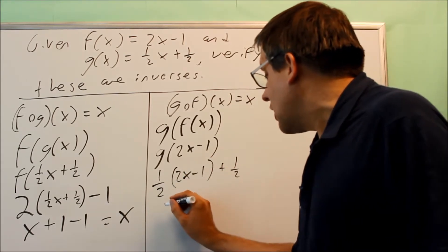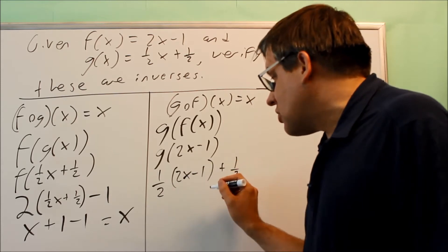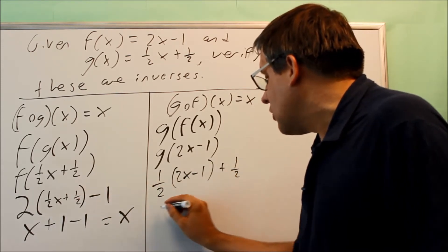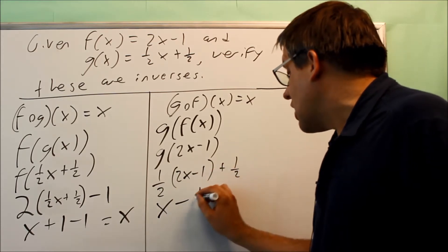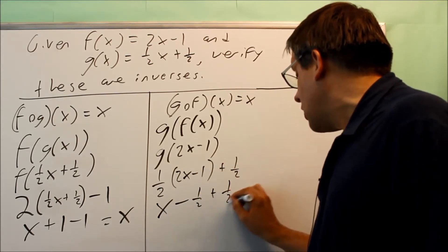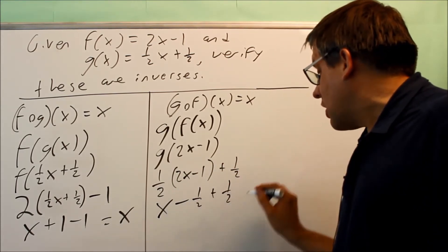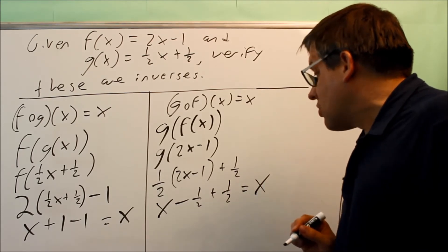I get one-half times 2x. That gives you, again, one-half times two, same as before. It's going to give you just x, one x. One-half times negative one is negative one-half. Then you have plus one-half, and then those two are going to cancel out. That also gives you an x.